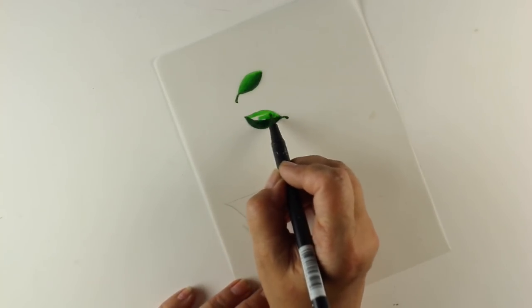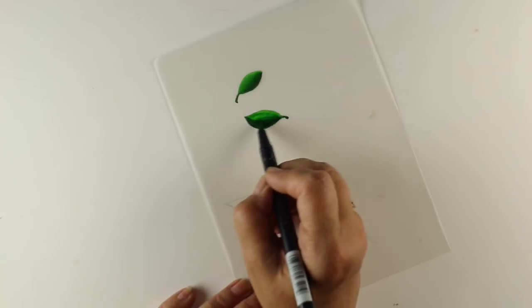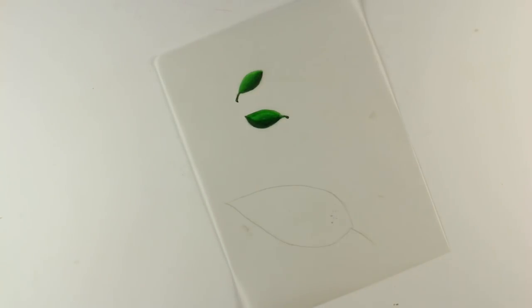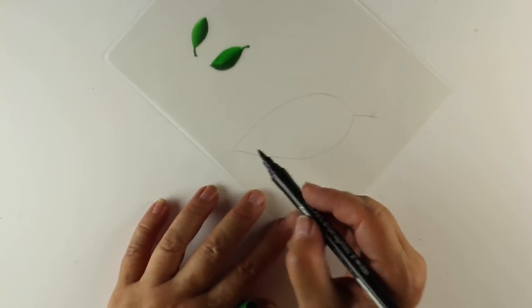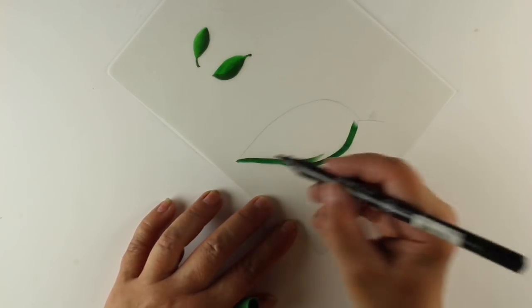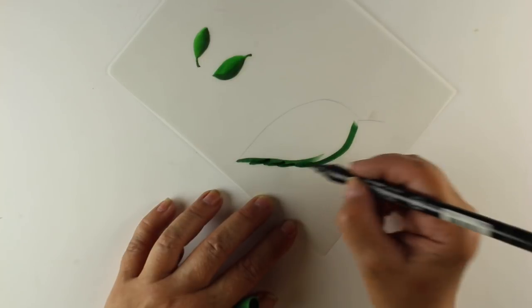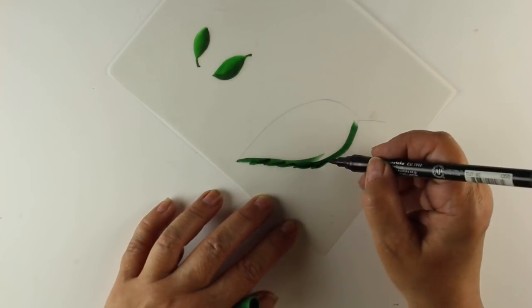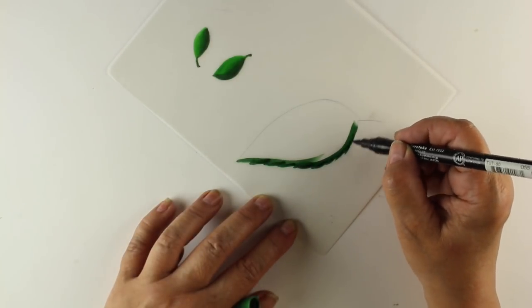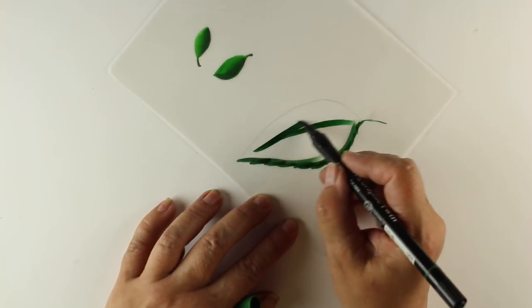And to make my leaves look like they have some dimension, I'm using two greens. Did my dark green first, go over it with my light green, and then kind of scribble over top of them so I get a nice blend between them. And I'll do the same thing on this larger leaf down here at the bottom. And since it's larger, I have a little more room that I can play with, so I'm adding a little bit of a sort of scalloped edge to my leaf. I'll just make it a little more interesting since it is a giant, ginormous leaf.